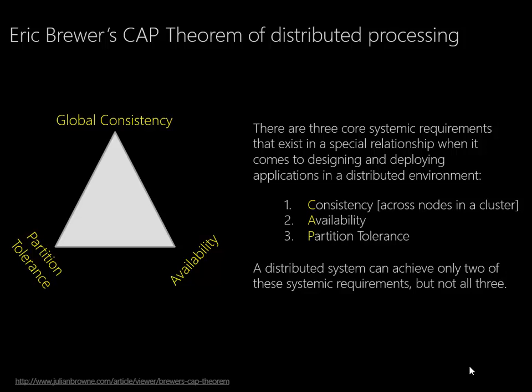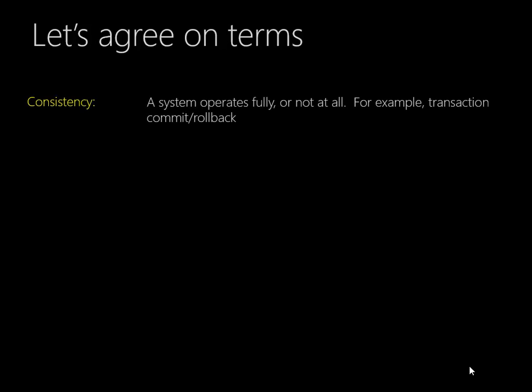The three requirements are consistency, availability, and partition tolerance. If a system is consistent, it means it operates fully or not at all. A good example of this is transaction commit rollback. So as we go to update a system and we update three different tables, if we can't update all the tables, then all the changes come back. If we're trying to update an order detail table and an order header that has a total, if we can't update the details, then we can't update the header either. That would be a consistent system.